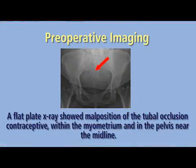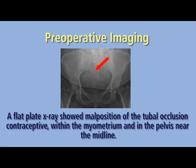Her symptoms worsened, and she presented to her physician for evaluation approximately two weeks after her procedure. A flat plate X-ray showed malposition of the tubal occlusion contraceptive located within the myometrium and in the pelvis near the midline.